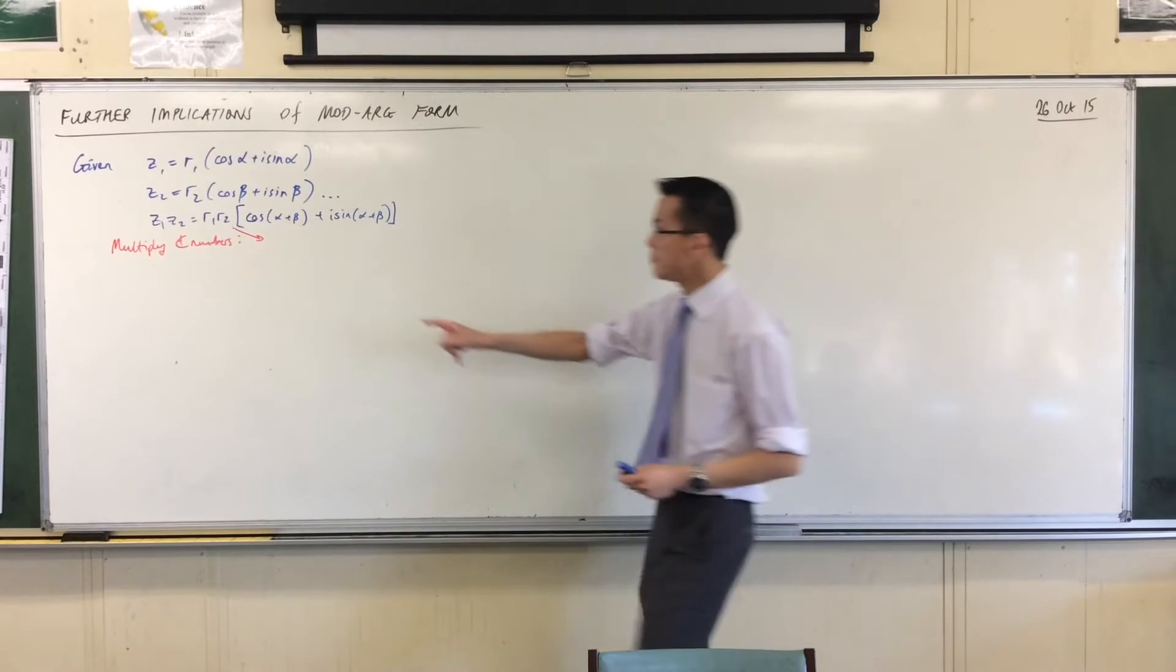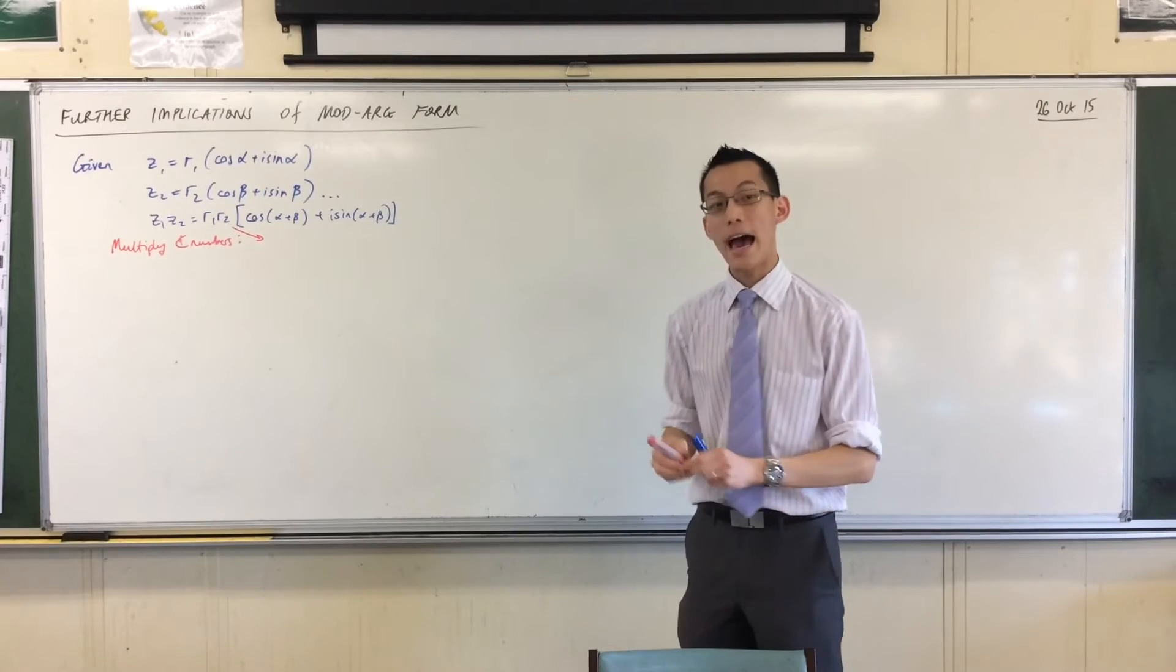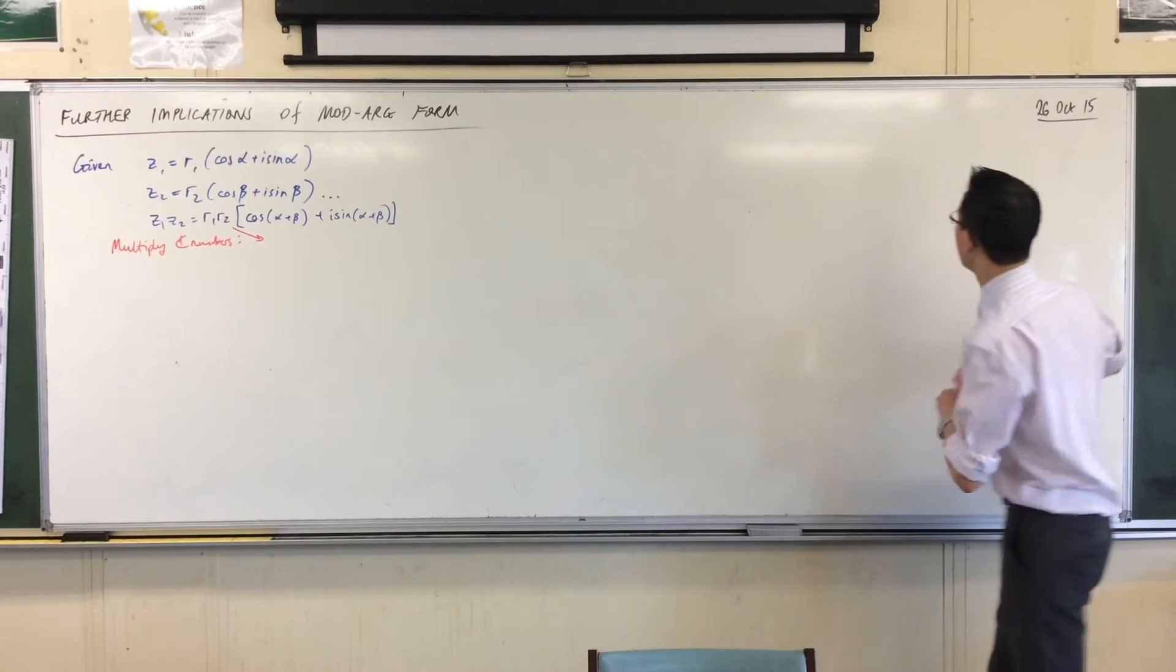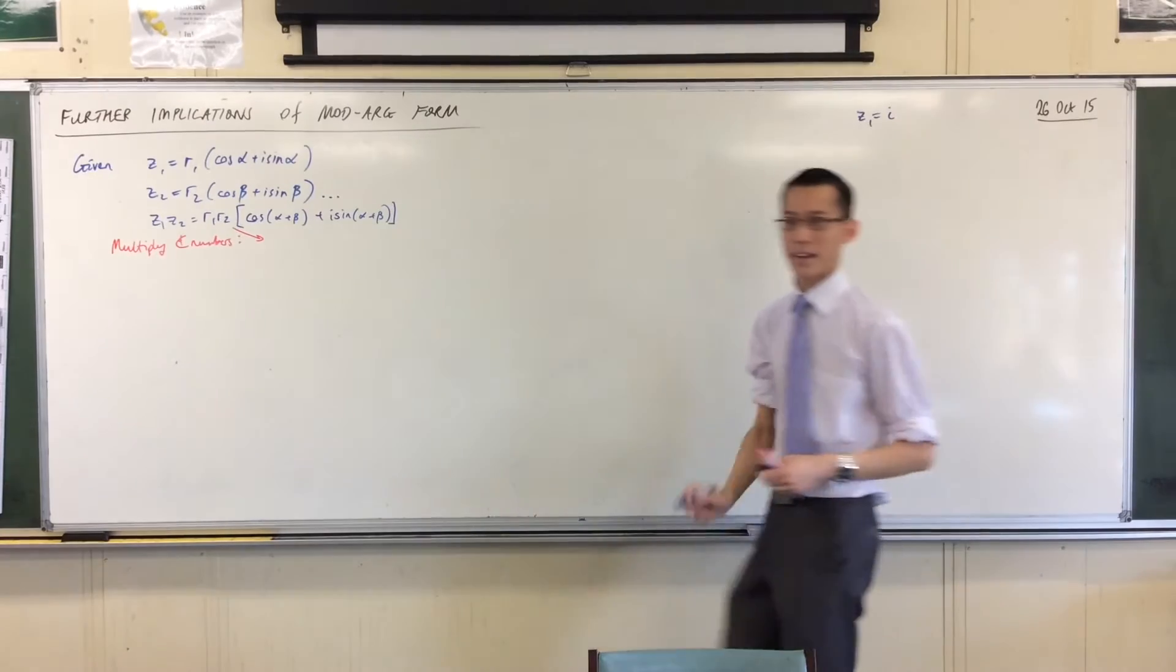Number one, you multiply these mods, which geometrically means, for instance, if I had a number like, say let's take z1, a simple example like i. So you know where that is - it's on the purely imaginary axis.